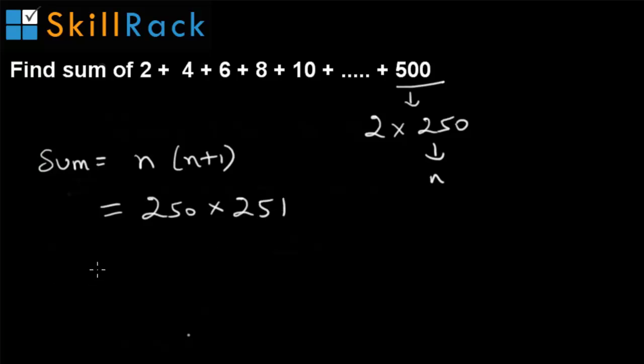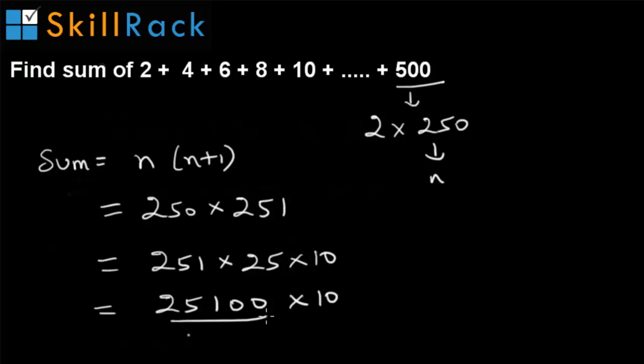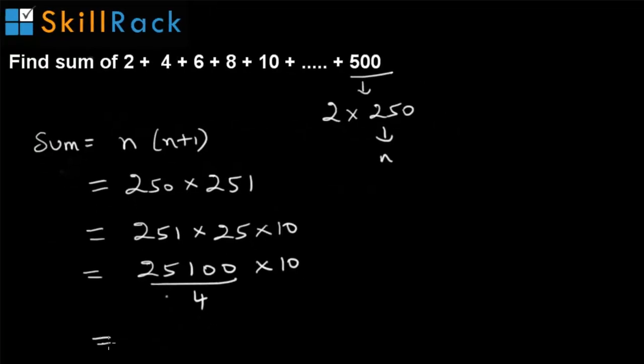So we can write 250 as 25 into 10 and 25 as 100 by 4 to simplify the calculation. So we write 25 as 100 by 4, so it becomes 25100 into 10 by 4. So we get 62750 as the answer.